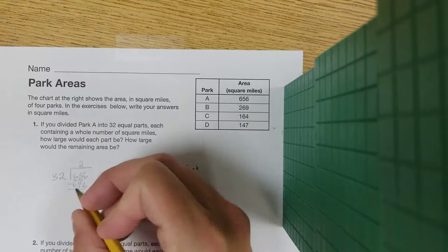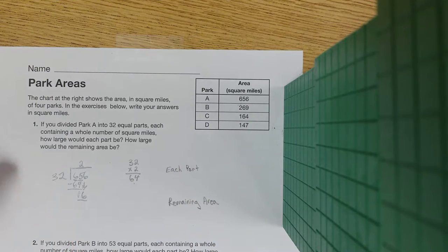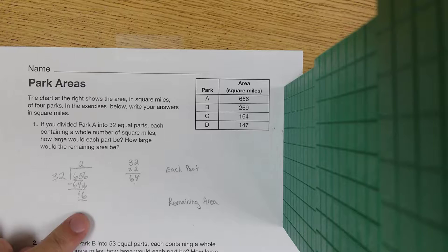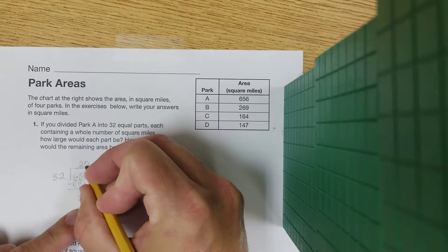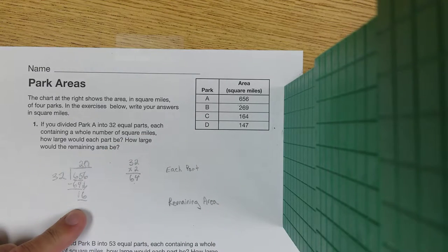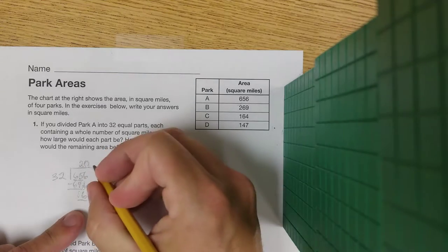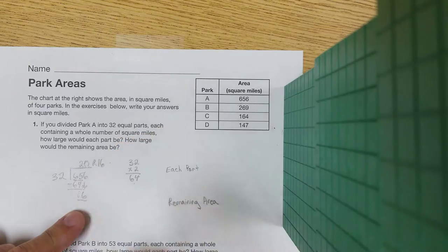And then I'm going to bring down my 6, which my new number is 16. Can I skip count by 32 into 16? The answer is no, but we have to put that no above the 6. So our answer is 20 remainder 16.